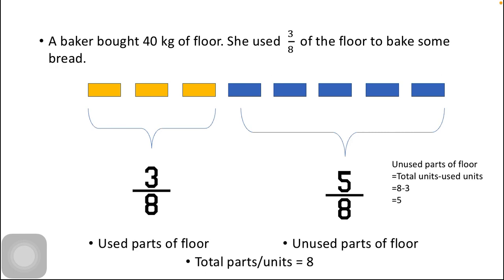To find the unused fraction, we use the formula: unused parts of flour equals total units minus used units, which equals 8 minus 3, and the answer we get is 5.